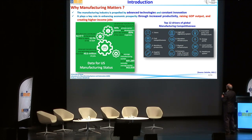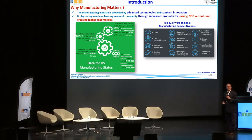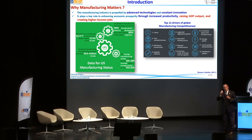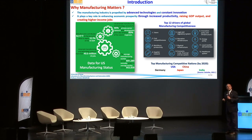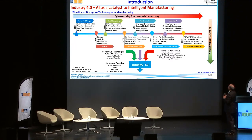A few topics here related to the drivers for global manufacturing competitiveness: talents, education, infrastructure, energy, physical infrastructure, economy, healthcare system — all these are affected by manufacturing, which is one of the societal activities. Not all society 4.0 is manufacturing; it's one of the human activities in the framework of society. Here you can see some nations which are very strong in manufacturing, like USA, China, Germany, Japan, France, UK, and others. And now here we can see how technology is a catalyst to intelligent manufacturing.